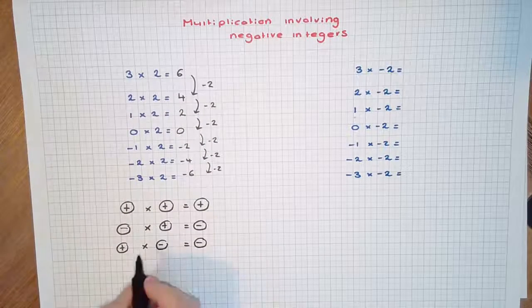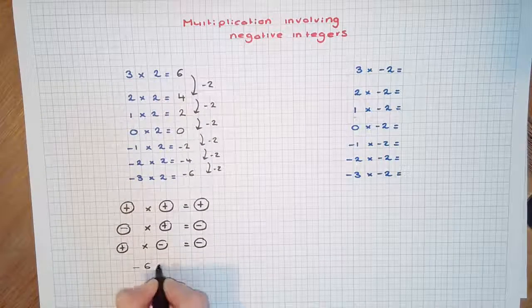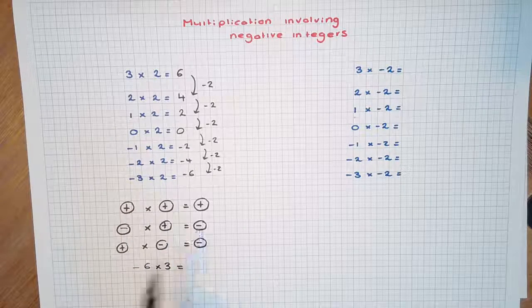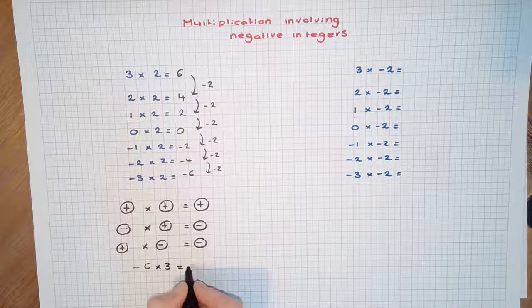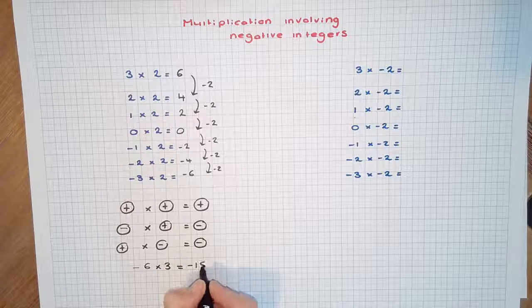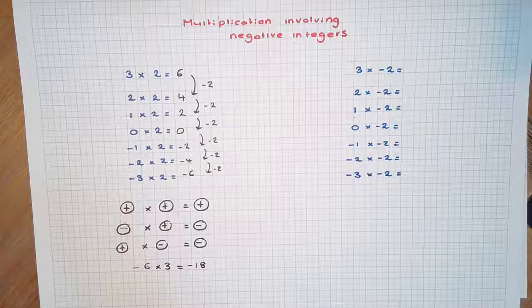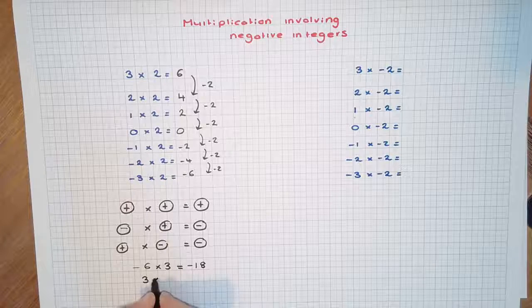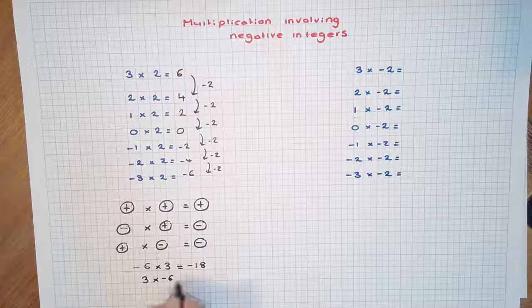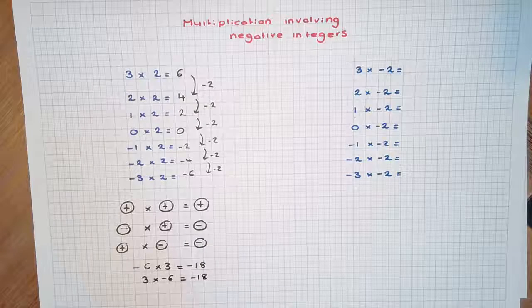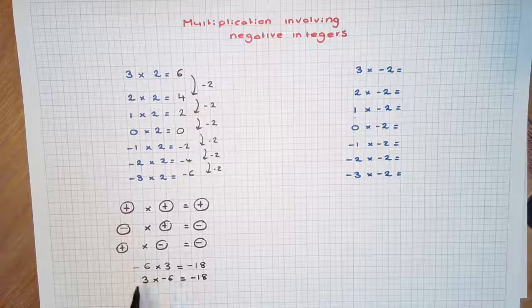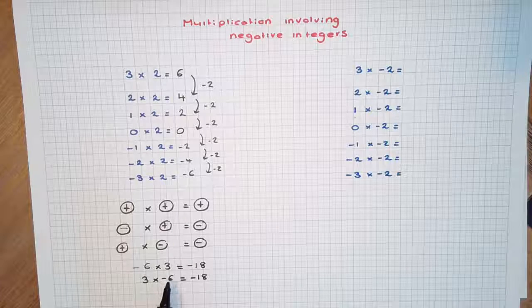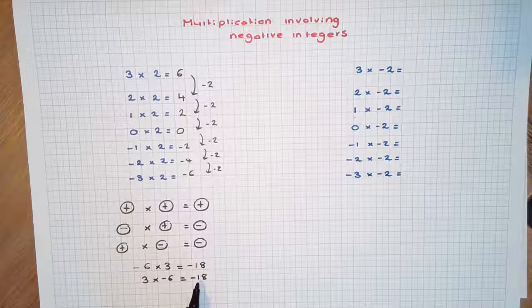Let's have a look at an example. Negative 6 times 3 — we know that a negative times a positive will result in a negative answer. So 6 times 3 is 18, but because one number is negative, the answer is negative 18. Similarly, 3 times negative 6 will also equal negative 18 using the commutative law. This is like saying 3 lots of negative 6, that is negative 6 plus negative 6 plus negative 6, which equals negative 18.